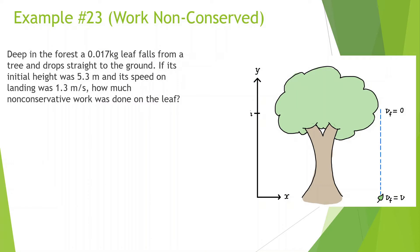Deep in the forest, a 0.017 kilogram leaf falls from a tree and drops straight to the ground. Its initial height is 5.3 meters, and its landing speed was 1.3 meters per second. How much non-conservative work was done on the leaf?